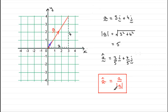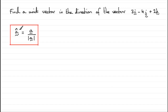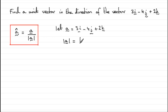Now we can use this result not only for two-dimensional vectors — we can extend it to three-dimensional vectors. Like in this question, where we've got: find a unit vector in the direction of the vector 3i minus 4j plus 2k. The method doesn't change. Our formula for finding a unit vector is just to take the vector a and divide by the magnitude. So if we let the vector a be 3i minus 4j plus 2k, then the magnitude is given by extending Pythagoras' theorem — the sum of the squares of the components: 3 squared plus 4 squared plus 2 squared, which gives the square root of 29.